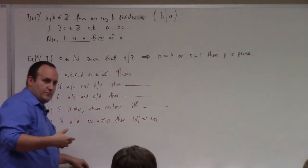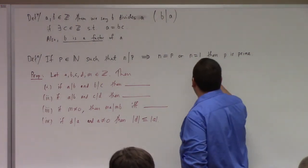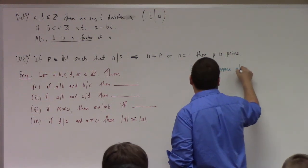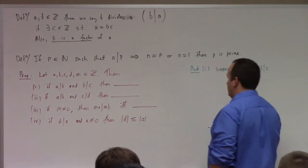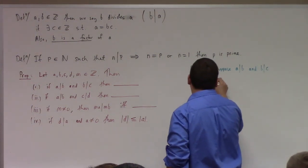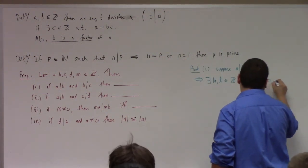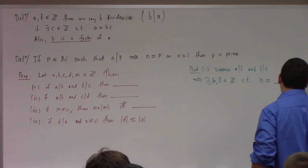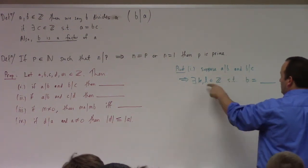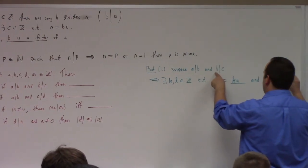Instead of just filling in the blanks, I'm going to prove one or two of these as we fill in the blank. Let's work on number one. Suppose that a divides b and b divides c. What does that tell us? There exists k and l in the integers such that — if a divides b, that means b is equal to k times a. If b divides c, that means c is equal to l times b.